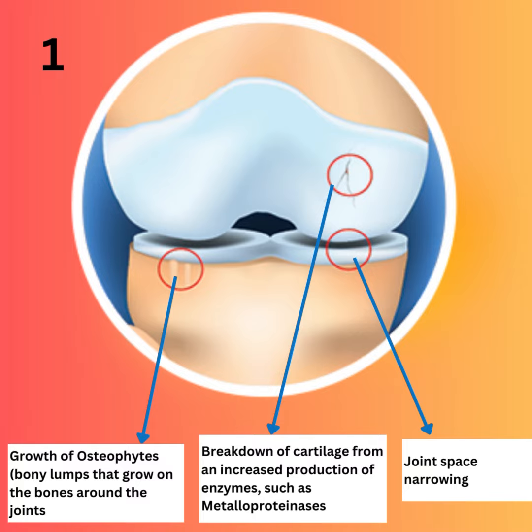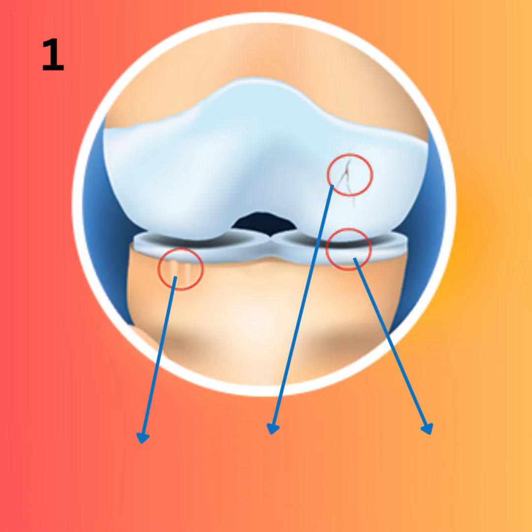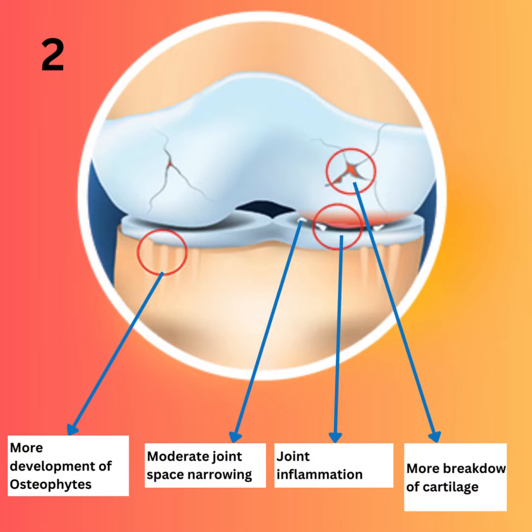Then, there is joint space narrowing. Third, there is growth of osteophytes — bony lumps that grow on the bones around the joints.